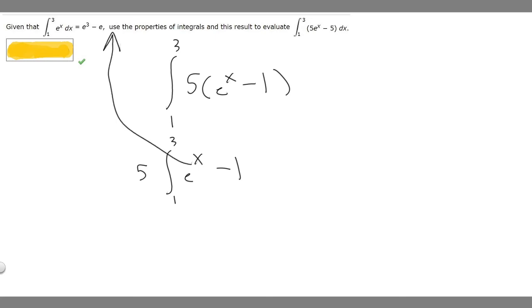But they already tell us what it is for e to the x. It's going to be e to the 3 minus e. So basically we're just going to have 5 times the quantity e to the 3 minus e.